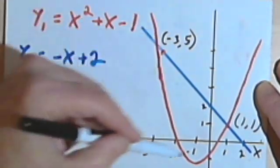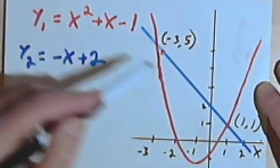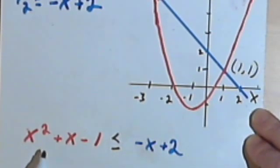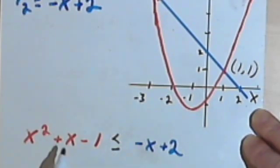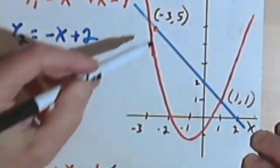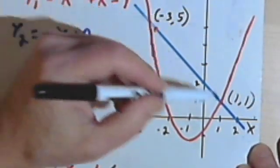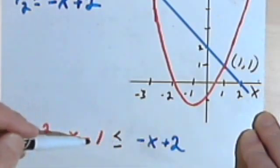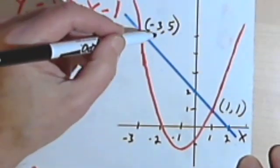Then y₂ equals negative x plus 2, shown in blue, giving us a blue straight line. Here's the inequality we're dealing with: x squared plus x minus 1 is less than or equal to negative x plus 2. If it were an equality, the two sides would be equal at the points where the two graphs intersect — at the points negative 3 comma 5 and 1 comma 1. But notice, I don't care about the y values. All I want to know is what are the x values — negative 3 and 1.